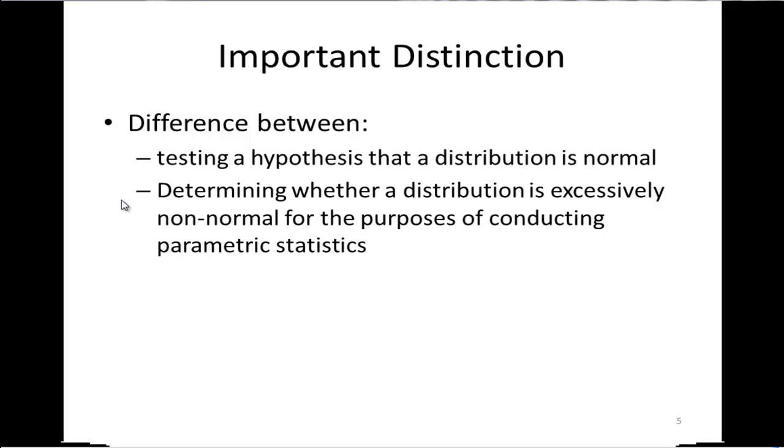But when you're trying to determine whether a distribution is excessively non-normal for the purposes of conducting a parametric statistic like a t-test or ANOVA, you should not use those tests that I just described. There's a difference between testing it for a hypothesis that you have versus evaluating whether the data are sufficiently normal for conducting a t-test in ANOVA.